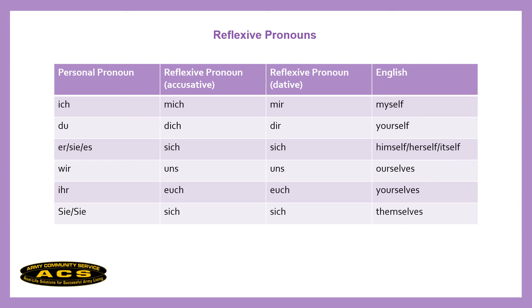For example, I could say in German 'Ich habe mir neue Schuhe gekauft,' and in English you don't have to say 'I bought myself new shoes' — you can simply say 'I bought new shoes.' So it doesn't have to be one-to-one all the time.